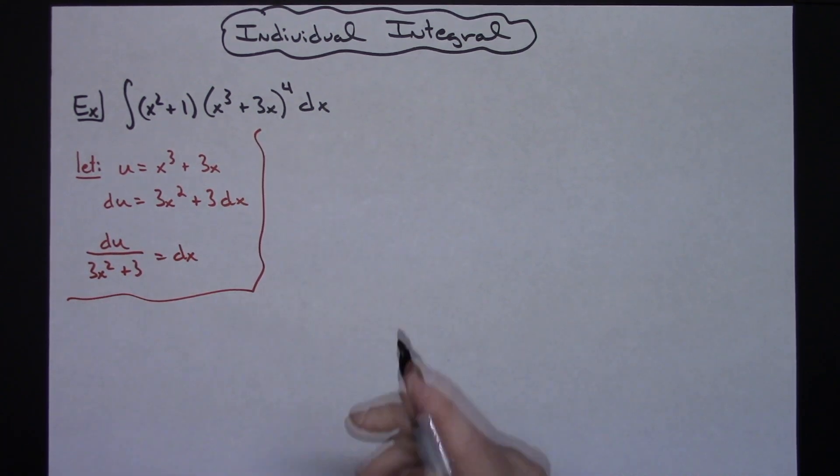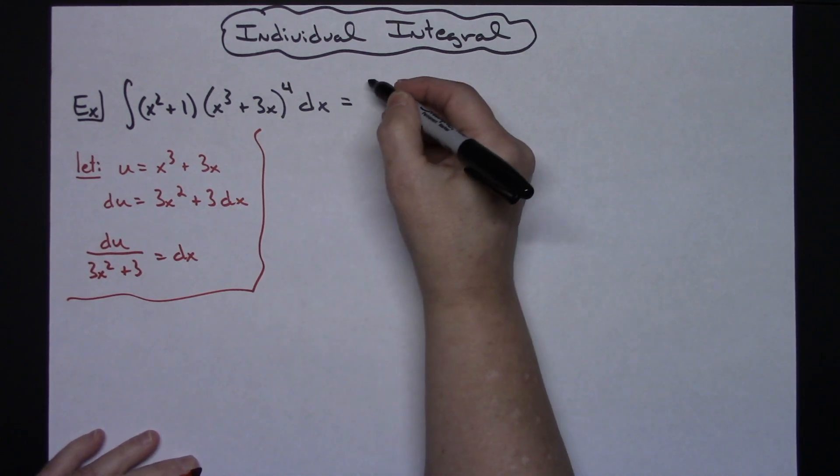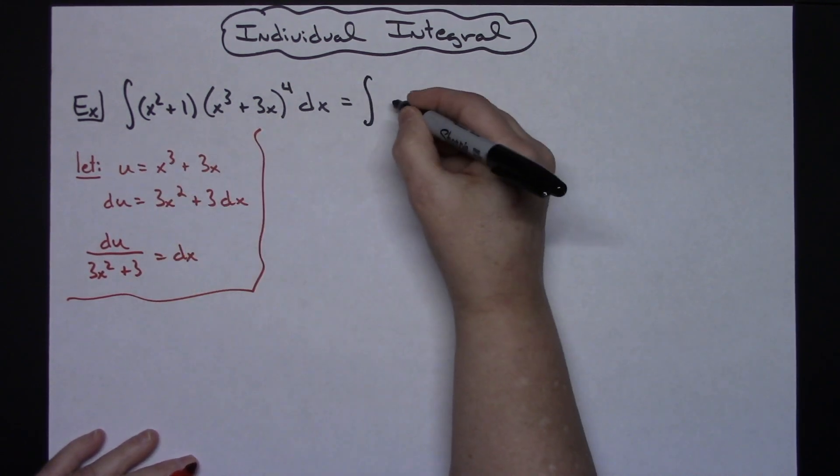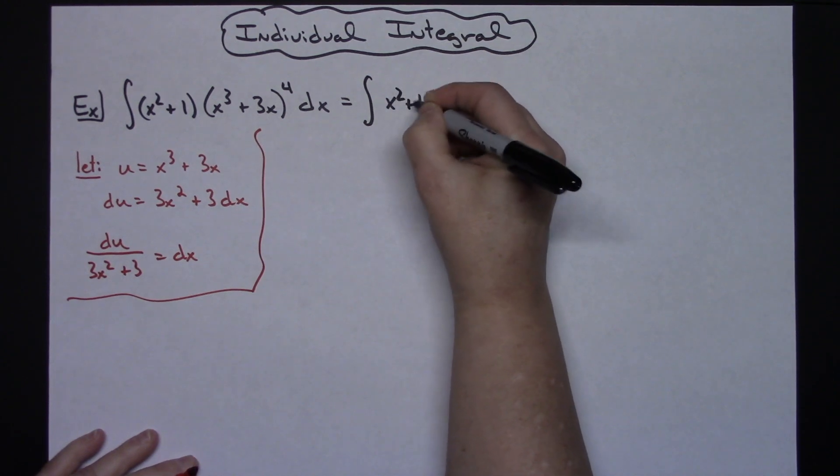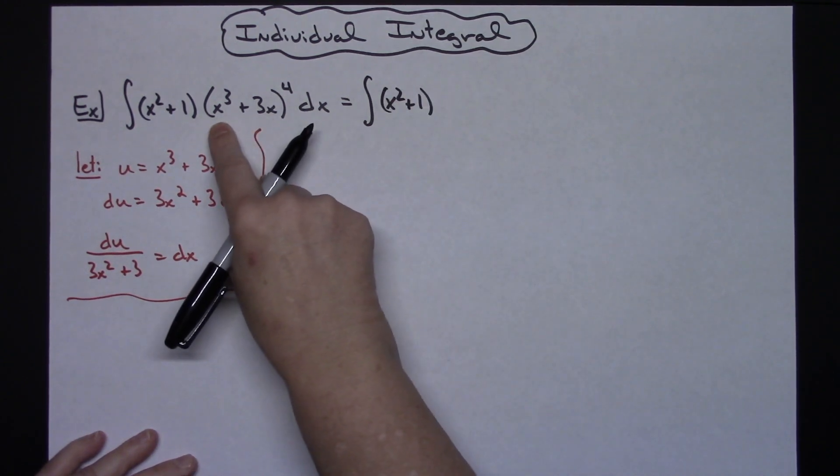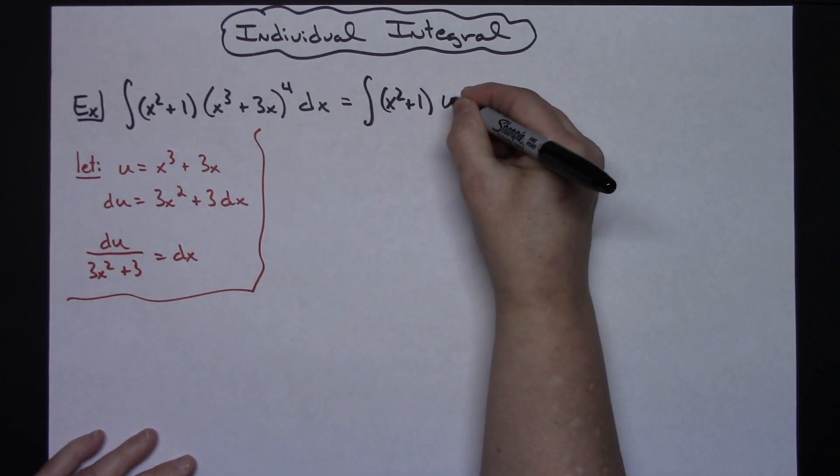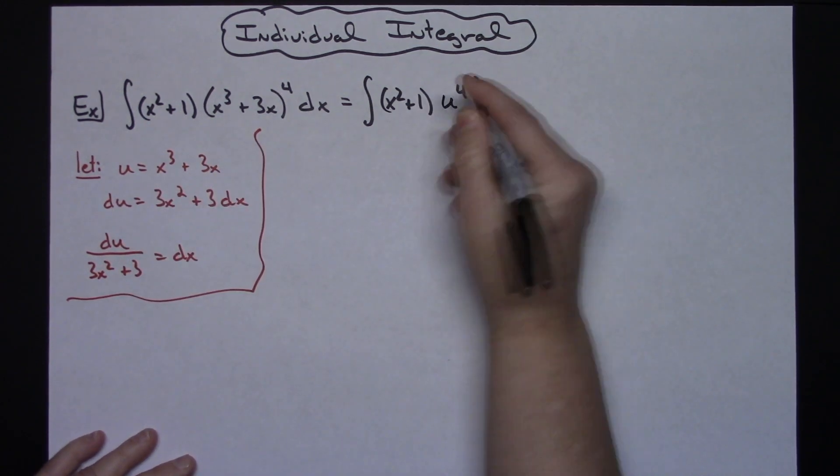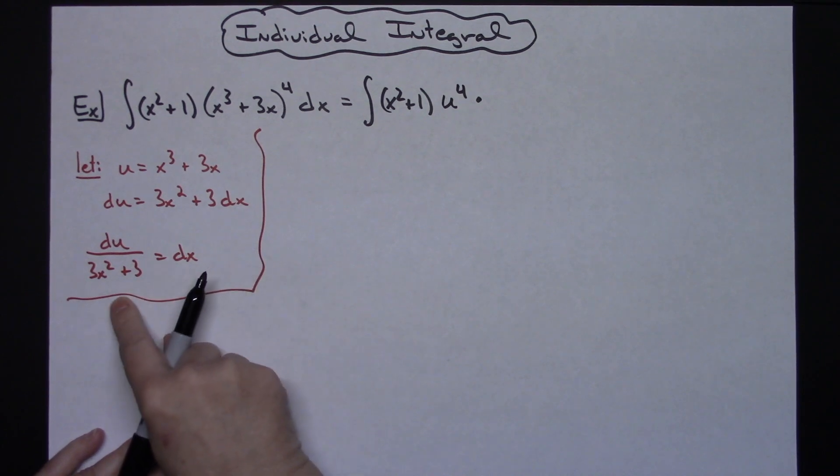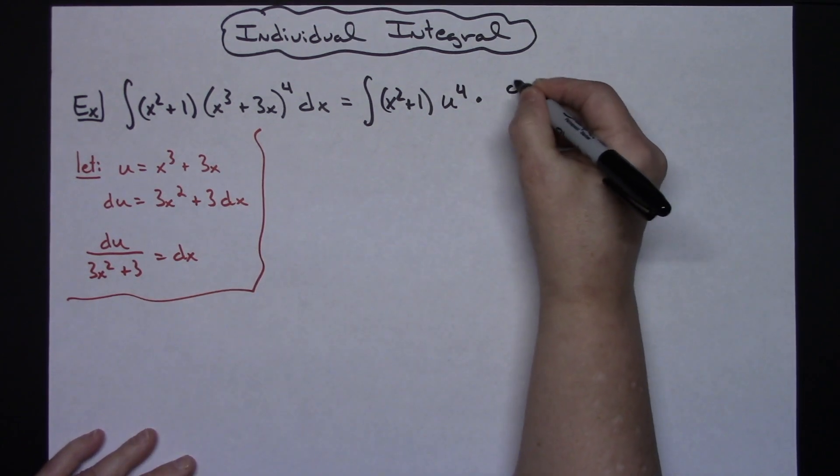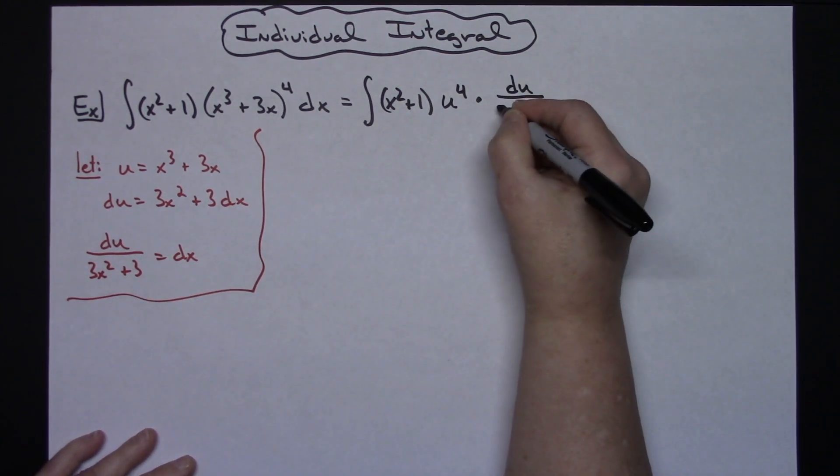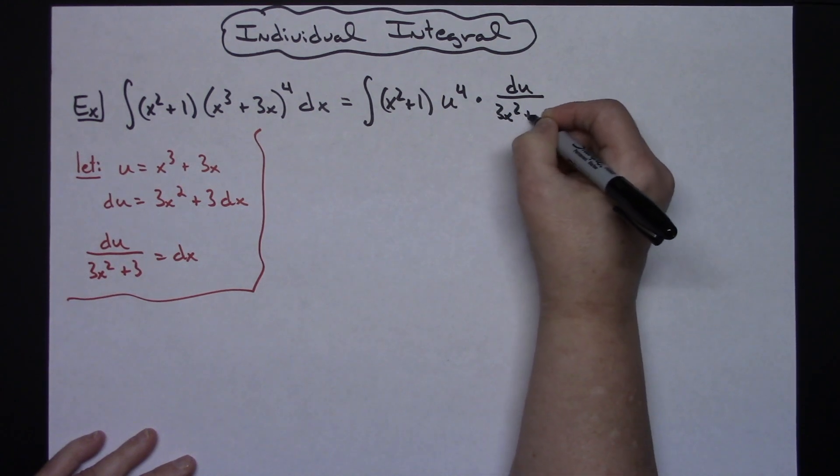Coming back up here to the original problem, we're going to do our substituting now. We'll have the integral, the x squared plus 1 is going to stay. The x to the third plus 3x, which I originally said u is, will be u to the fourth, and then changing the dx out for what we said that was equal, we'll have du over 3x squared plus 3.